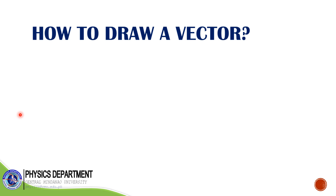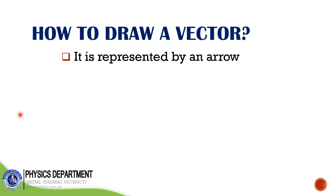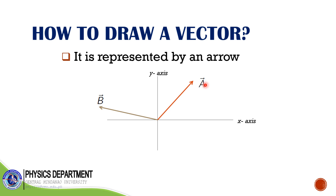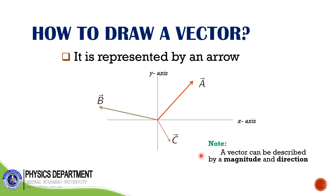How will you represent a vector in a Cartesian plane? It can be represented by an arrow. Say for example in the xy-plane, a vector can be drawn using an arrow. This arrow here is a vector and I call that vector B; another arrow I call vector C. We have to take note that a vector is a quantity that has magnitude and direction. Based on this figure, how are we going to solve for the magnitude of A, the magnitude of B, the magnitude of C, and also how are we going to find the direction of a vector?